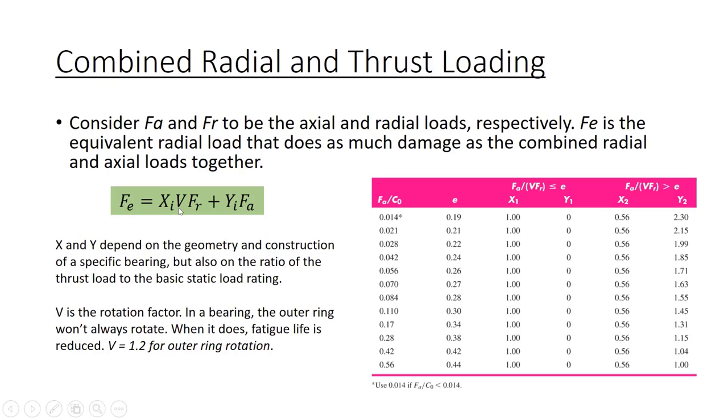V here is the rotation factor. In a bearing, the outer ring won't always rotate, but when it does, fatigue life is reduced. So you'll use V equals 1.2 for outer ring rotation, V equals 1 for inner ring rotation.